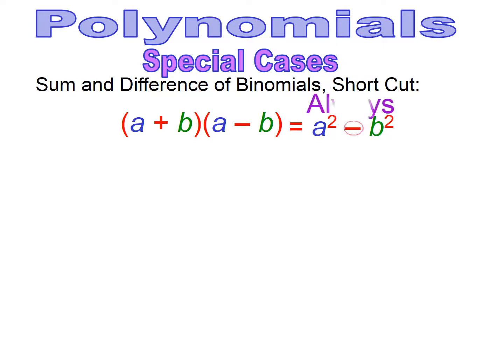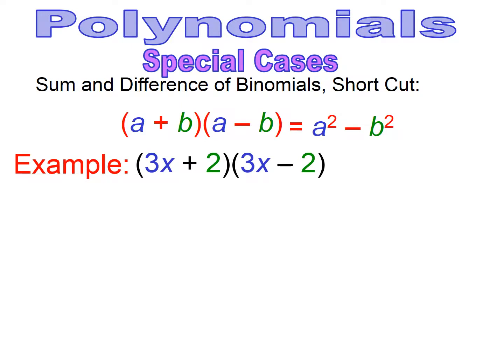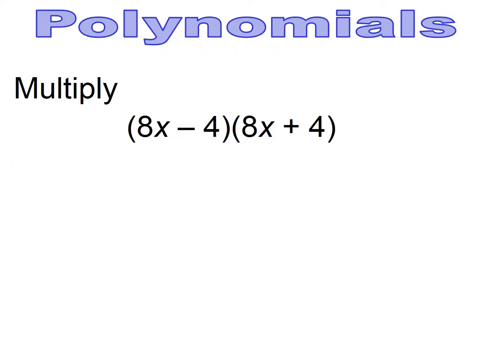The shortcut for sum and difference: take the first term and square it, and it's always going to be minus the second term squared. So when you have a binomial where it's the same first term and same last term and one has a plus while one has a minus, use this shortcut. You end up with 9x squared minus 4 — and remember, it's always minus. Pause and try. Using the shortcut, you end up getting 64x squared minus 16.